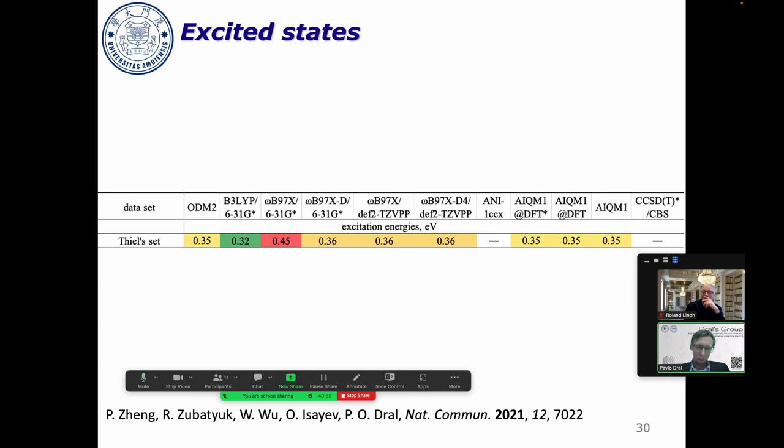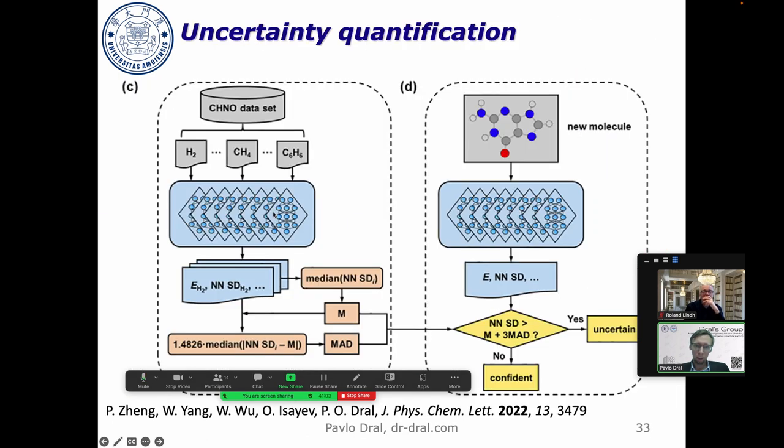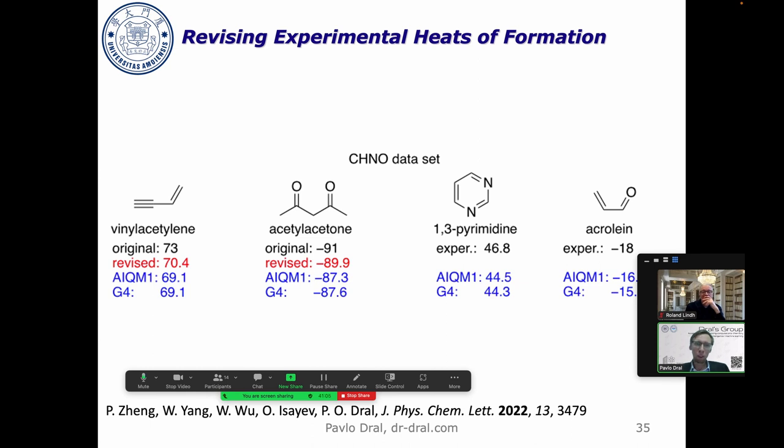We have uncertainty estimates in neural networks. This is another example where you have heats of formation. If you compare confident AIKM1 predictions for which uncertainty is very small with G4 approach, the numbers are similar but they're different from experiments. And again maybe experiment is wrong. Indeed we found a better experimental value which was closer to AIKM1 for this dataset. We found a mistake in our dataset which was used for benchmarking and developing semi-empirical methods. That's already quite good.